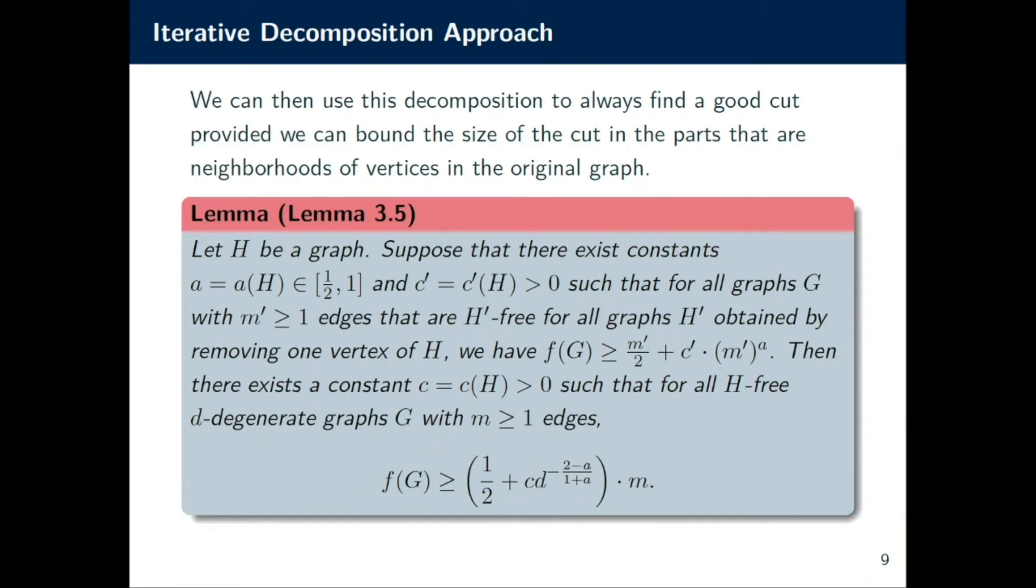So Lemma 3.5 is the lemma that actually captures what I was trying to explain in the previous slide. That is, it shows that if I have a guarantee for H'-free graphs, then if H is produced by adding a vertex to H', we can then extend the guarantee from H' graphs to H.